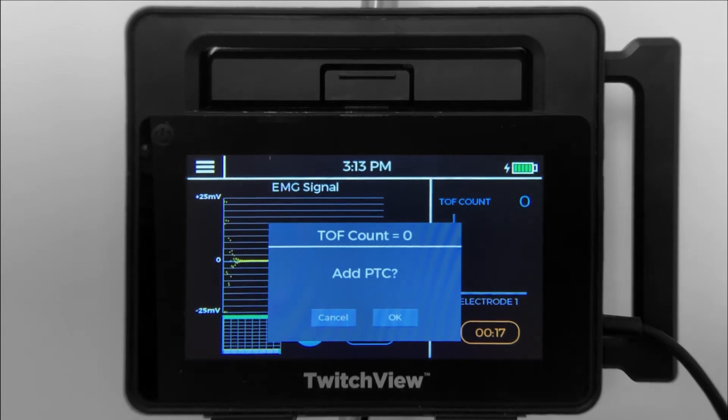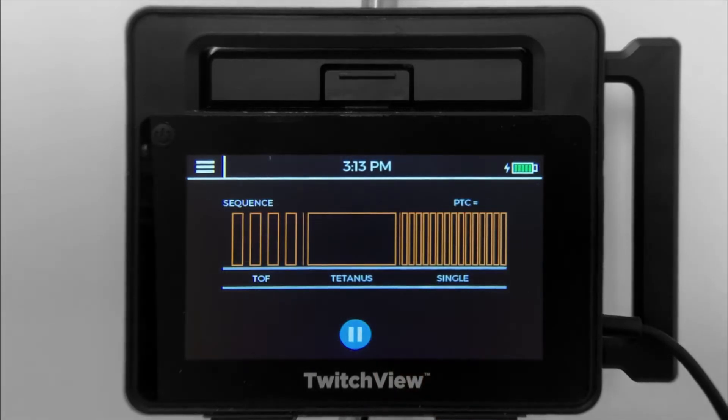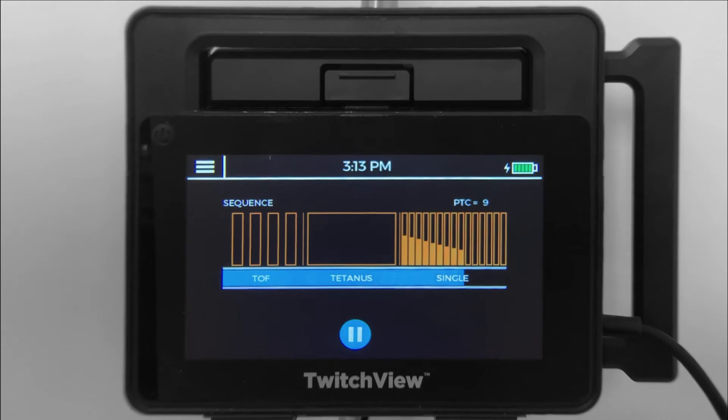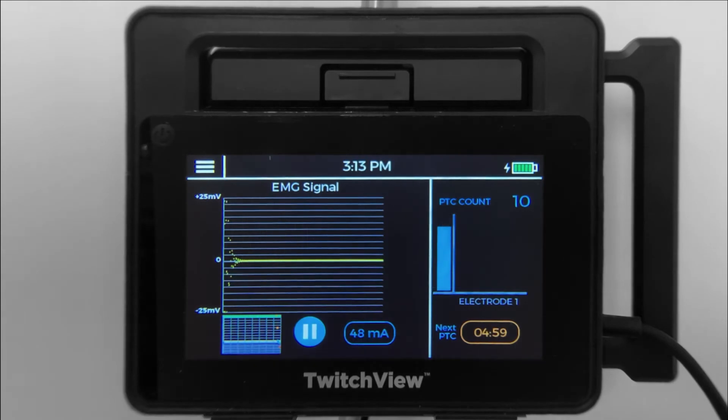Prior to every post-tetanic measurement, the monitor runs a TRAIN-4. If there is no response, the monitor will proceed with tetanic stimulation followed by single twitches. The post-tetanic count can range from 0 to 15. A post-tetanic count of 0 represents profound paralysis, and a post-tetanic count of 15 indicates that the patient will respond to TRAIN-4 stimulation soon.